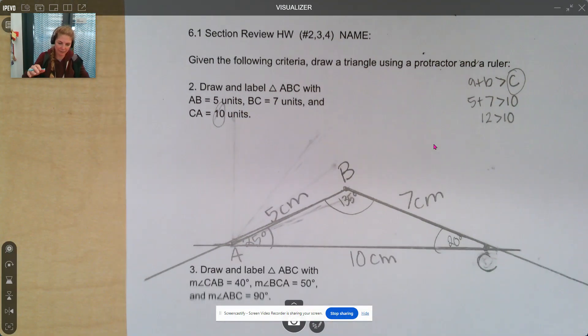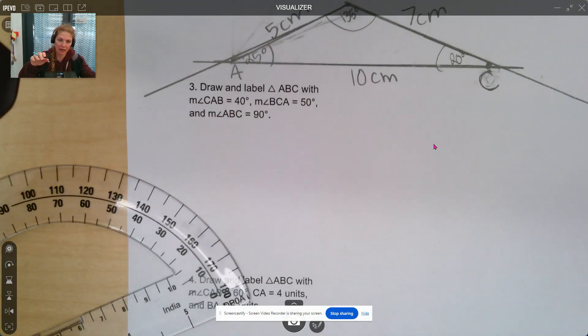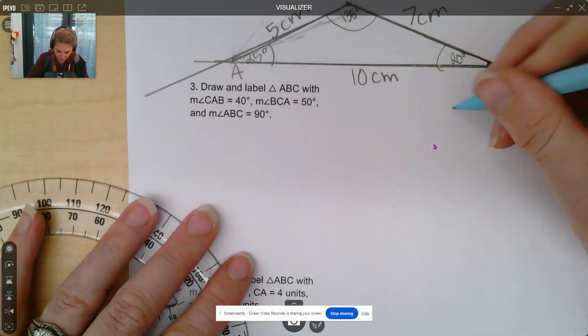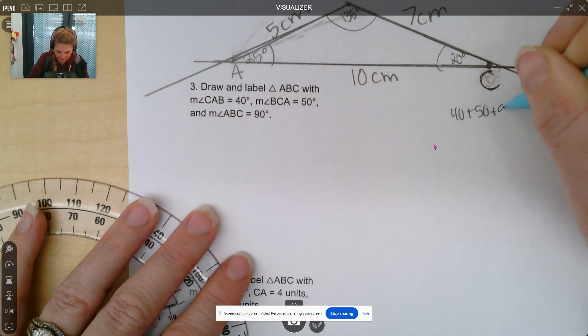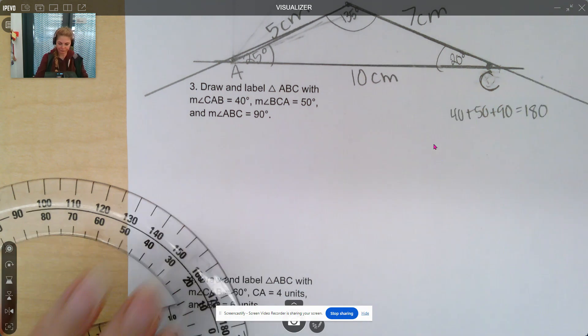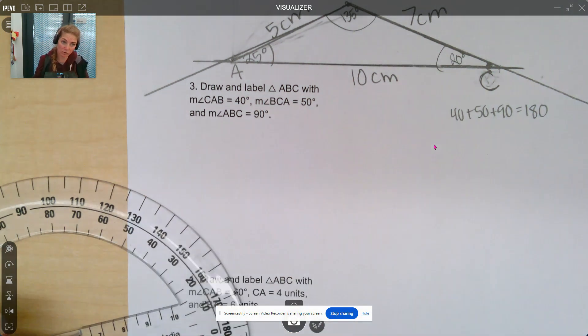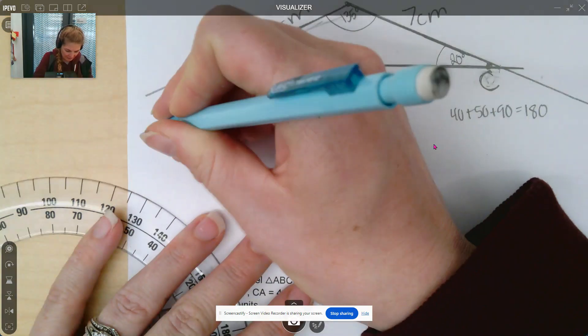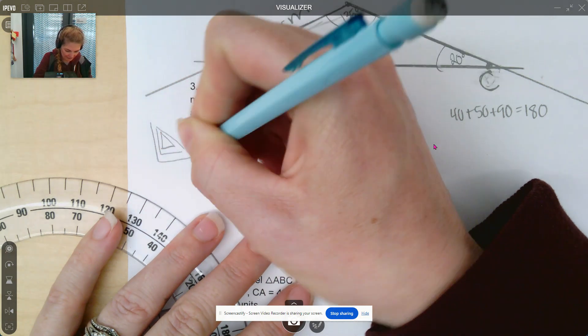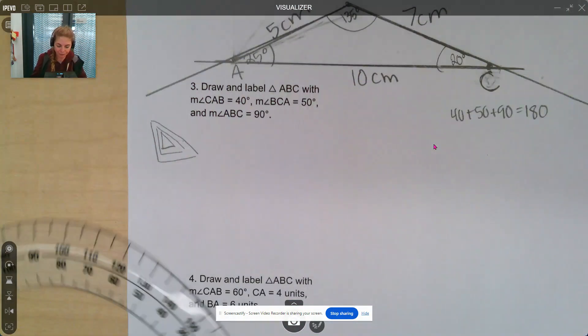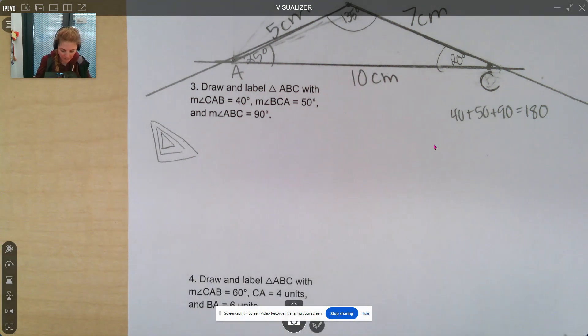Okay, let's move on to the next one. The next one gives us three angles, and they add up to be 180 degrees, which is great. We know it's going to be a triangle. So 40 plus 50 plus 90 is equal to 180. So that is good. And this triangle, there is going to be multiple triangles we can draw with this because we could increase the side lengths by the same scale factor and still have the same angles. So there's multiple triangles we can draw, but we just have to draw one of them.